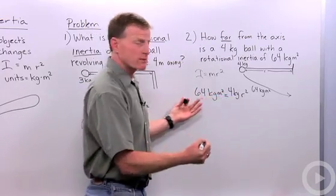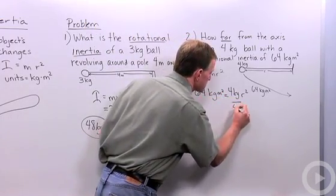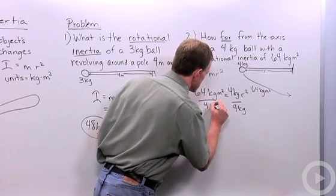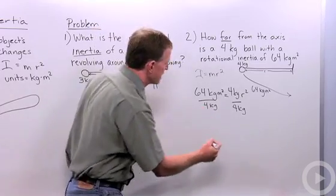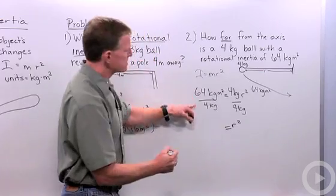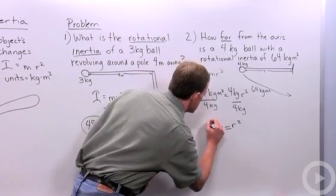So if I want to simplify this equation, I'm going to divide by 4 kilograms, and divide this by 4 kilograms. Reducing that, r squared is going to equal 64 divided by 4, which is 16, and my kilograms cancel.